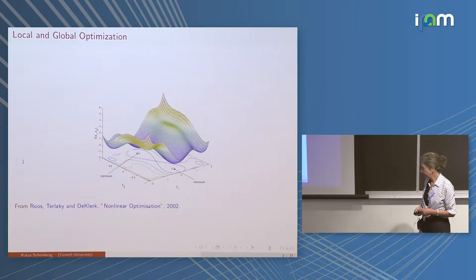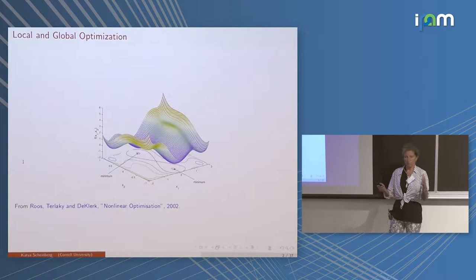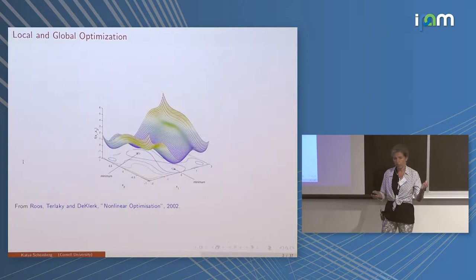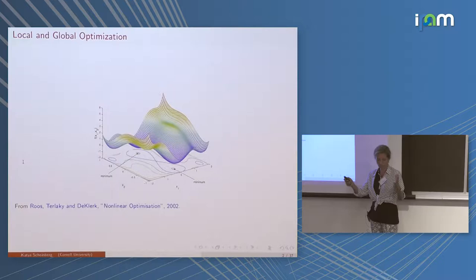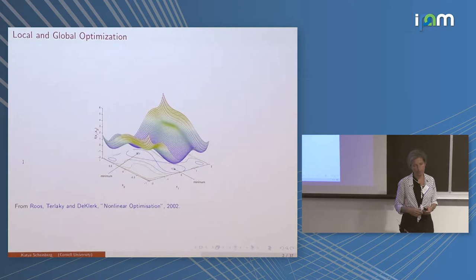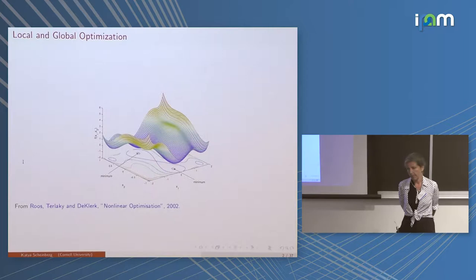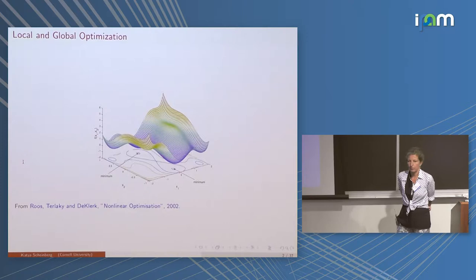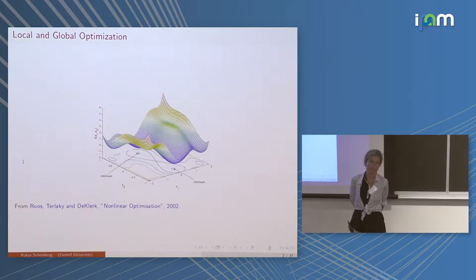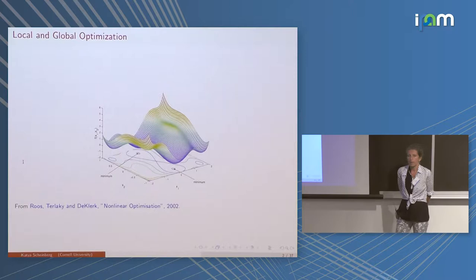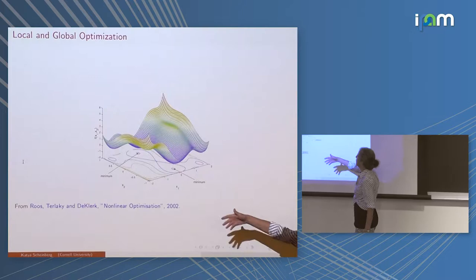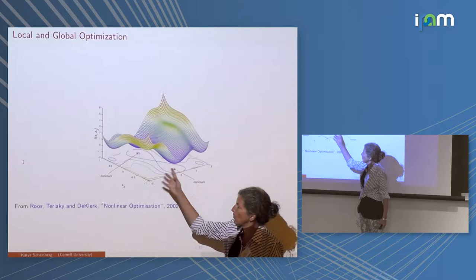I'd like to take a step back and look at what black box optimization is about — what we can do, including theoretically justified methods, and where we may need to resort to some randomness. The key question is: do you want to do local or global optimization? Everybody wants global optimization but can't really guarantee it, so you try your best. That's one reason to work with Bayesian optimization, evolutionary strategies, or genetic algorithms.